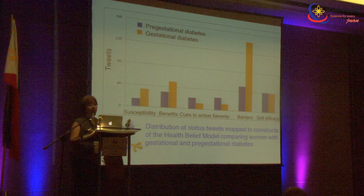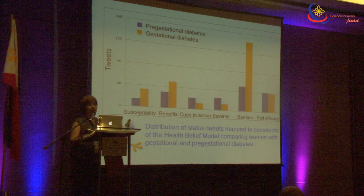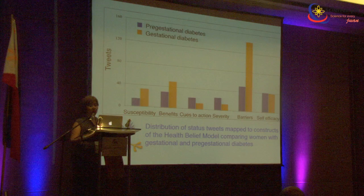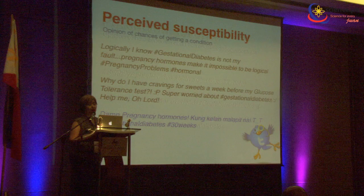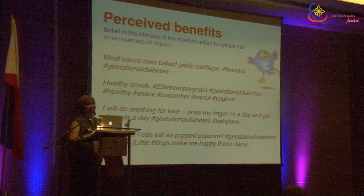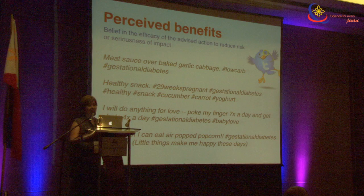Here are some representative tweets for perceived severity — for example, 'Heading to ultrasound to see how big baby girl is, hashtag gestational diabetes.' For perceived susceptibility, there was a Tagalog tweet. For perceived benefits: eating healthy. For perceived barriers: 'Cheating on a diet and feeling like a murderer while you frantically hide the evidence.' And for perceived benefits: 'I will do anything for love — poke my finger seven times a day and get shots four times a day, gestational diabetes, baby love.'